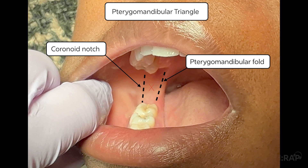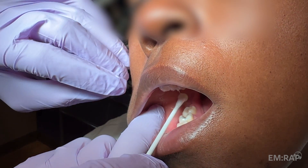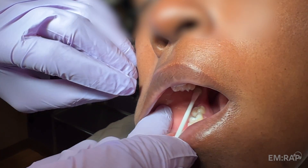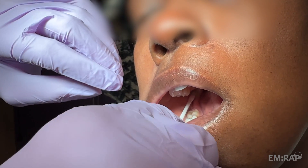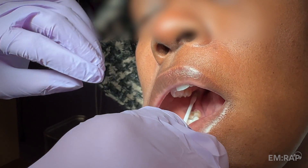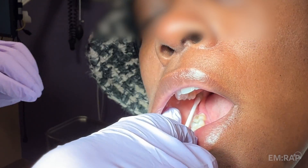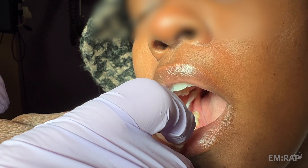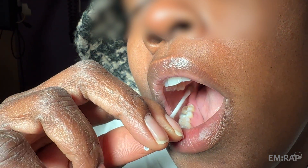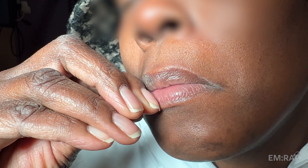The injection site is halfway between these structures, about 1 cm above the molar. Before an intraoral injection, I recommend applying topical lidocaine to this site, which can be done with viscous lidocaine on a 2x2 gauze or cotton-tipped applicator, or with a commercially available lidocaine product, leaving it in place for a couple of minutes.